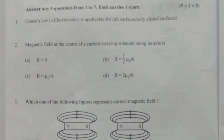Question 2. The magnetic field at the center of a current carrying solenoid along its axis is: (a) B equals 0, (b) B equals 1 by 2 mu 0 ni, (c) B equals mu 0 ni, (d) B equals 2 mu 0 ni. Answer: B equals mu 0 ni.